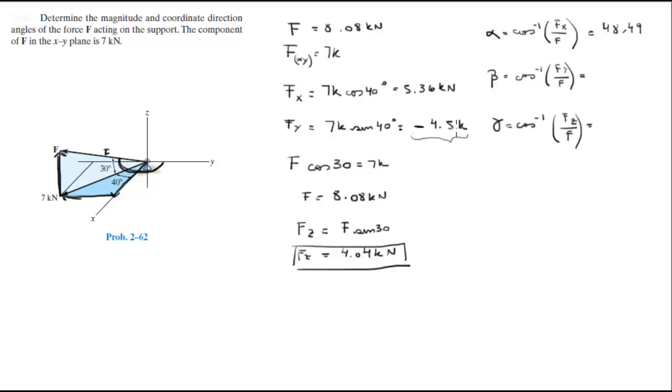So remember, negative 4.5. Okay, let me write it down. For this one it's negative 4.5. Don't forget the negative, otherwise it would be wrong. And the angle that it should give is 123.84 degrees, and the last angle is 60 degrees.